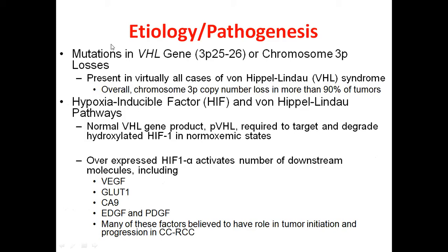The etiology lies in a mutation in the VHL gene, which is located on the short arm of chromosome 3, or when there is a loss of chromosome 3 itself. This tumor is virtually present in all cases of von Hippel-Lindau syndrome. When the tumor is sporadic and not associated with the syndrome, it is mainly unilateral and could be unifocal. When associated with the syndrome, it is commonly bilateral.